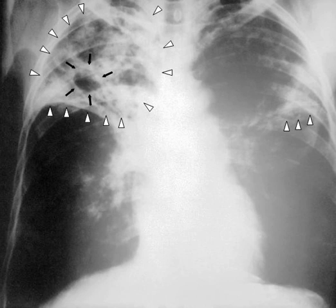Those at high risk include household, workplace, and social contacts of people with active TB. Treatment requires the use of multiple antibiotics over a long period of time. Antibiotic resistance is a growing problem with increasing rates of multiple drug-resistant tuberculosis and extensively drug-resistant tuberculosis. Presently, one-quarter of the world's population is thought to be infected with TB. New infections occur in about 1% of the population each year.